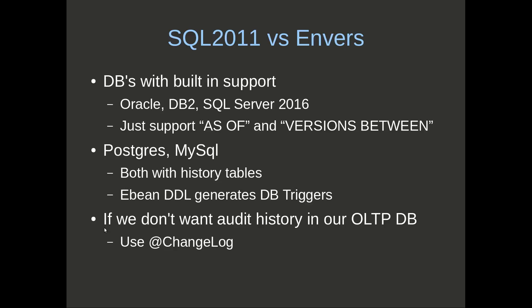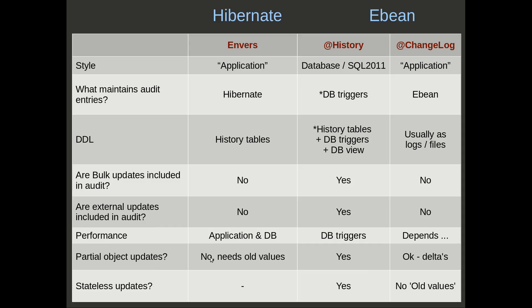The last point here is: if we don't want audit history in our OLTP database, what do we do? For eBean, we'll use changelog. So we'll do a quick comparison of changelog with these other two. Changelog is an application-centric approach, like EnVers. That means eBean is listening for insert, update, deletes, and putting out changelog entries based on that.